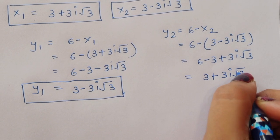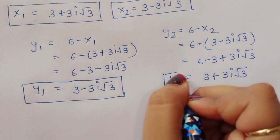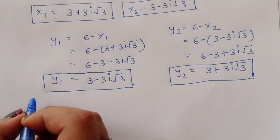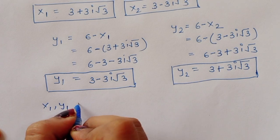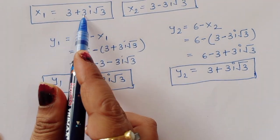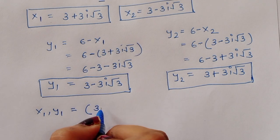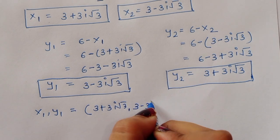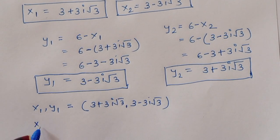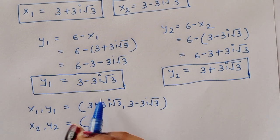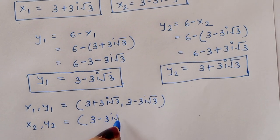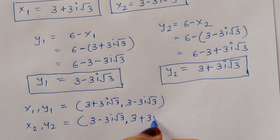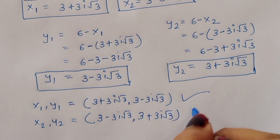So the two solution pairs are: x₁ = 3 + 3i√3 with y₁ = 3 − 3i√3, and x₂ = 3 − 3i√3 with y₂ = 3 + 3i√3. This is the complete solution. Thank you.